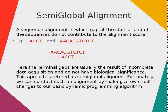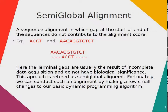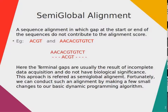When searching for the best alignment between a short sequence and an entire genome, we might wish to avoid penalizing for gaps that appear at one or both ends of the sequence. Here, the terminal gaps are usually the result of incomplete data acquisition and do not have biological significance. This approach is referred to as semi-global alignment.